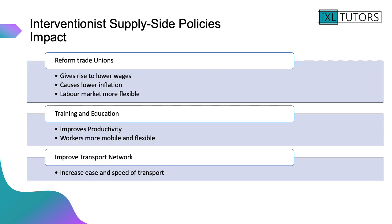Let's look at three different supply side policies. The first is to reform trade unions — that could give rise to lower wages, and by reforming trade unions we're essentially taking away some of their power. If wages are lower, that could cause lower inflation and make labour markets more flexible. Second, improving training and education will improve the productivity of workers and make them more flexible and mobile, so they can move between different jobs and potentially different sectors. Finally, improving the transport network could increase the ease and speed of transport — keep that in mind as it will come up when we look at HS2.